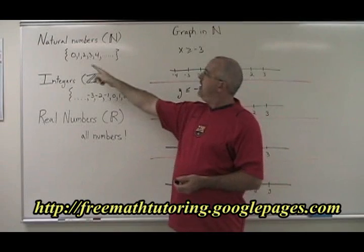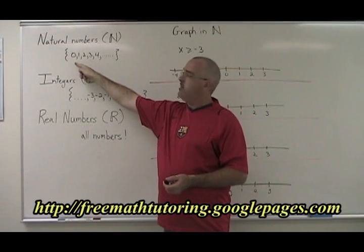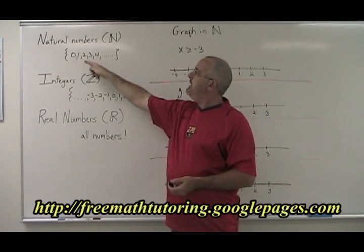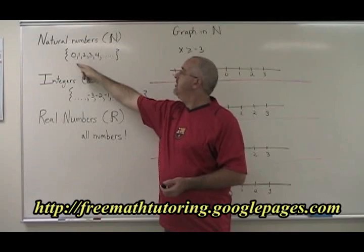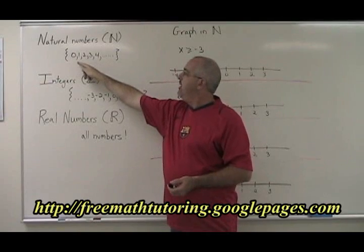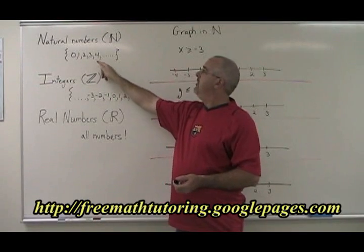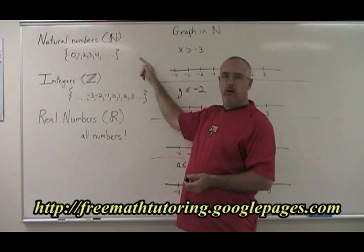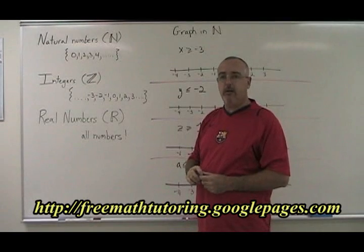Natural numbers are all of the whole positive numbers and zero. So this set describes all natural numbers: zero, one, two, three, four, and it goes on and on and on in a positive direction.